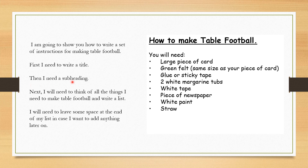We also have a subheading, and your subheading is the bit that says 'You will need.' Underneath there you can write bullet points of all the things that you would need. These are all the things I need for making table football, and I'm going to leave some space at the end of my list in case I want to add anything later on.